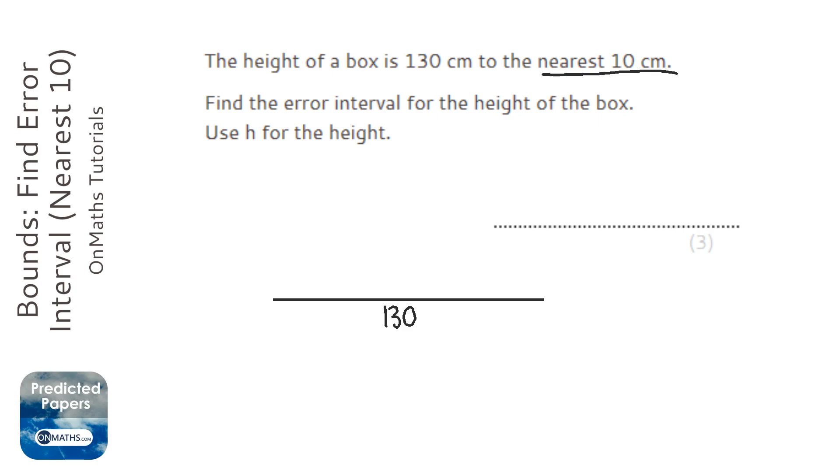So the next one down that it could have rounded to is 120, and the next one up it could have rounded to is 140. Now to find the intervals we're going to work out the halfway points between the two.